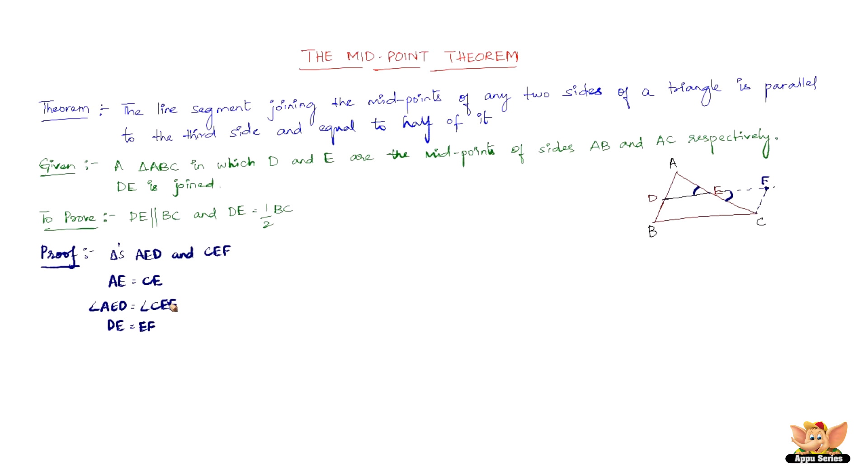Now by side angle side congruence criterion, we have proved that triangle AED is congruent to triangle CEF. And so we have AD equal to CF. Because now that we proved triangle AED is congruent to triangle CEF, that is nothing but corresponding parts of congruent triangles are equal, that is CPCT.